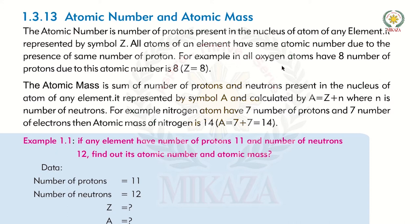For example, carbon has three isotopes — C12, C13, and C14 — but the atomic number is always 6 because the number of protons does not change. Similarly, all oxygen atoms have 8 protons, so the atomic number of oxygen is always 8, regardless of where the oxygen atom is found.